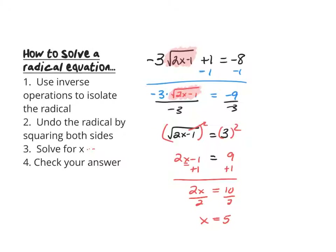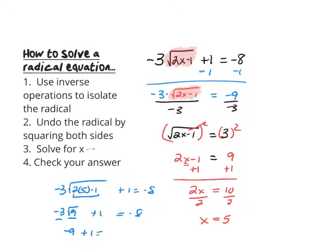If we quickly check our answer: negative 3 times the square root of 2 times 5 minus 1, plus 1 — we want to make sure that equals negative 8. The expression under the radical evaluates to 9, and the square root of 9 is 3, so we get negative 3 times 3 plus 1, which is negative 9 plus 1, and we do see that equals negative 8.